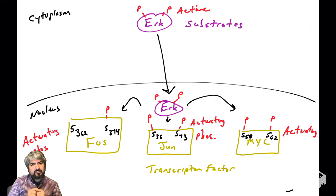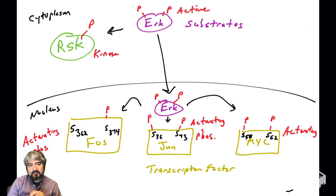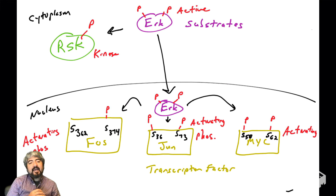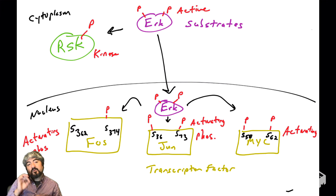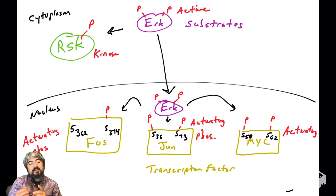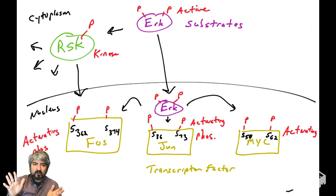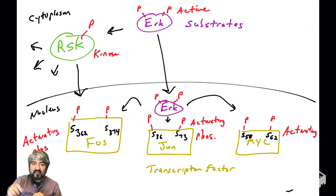There's another serine on FOS that's not phosphorylated by ERK, but it is phosphorylated by a kinase that is phosphorylated by ERK. Let's introduce another kinase: RSK. RSK is a kinase which can be phosphorylated by ERK, and when RSK is phosphorylated by ERK, it activates RSK, which can go phosphorylate its own set of proteins. RSK can go into the nucleus and phosphorylate FOS, which helps activate FOS.